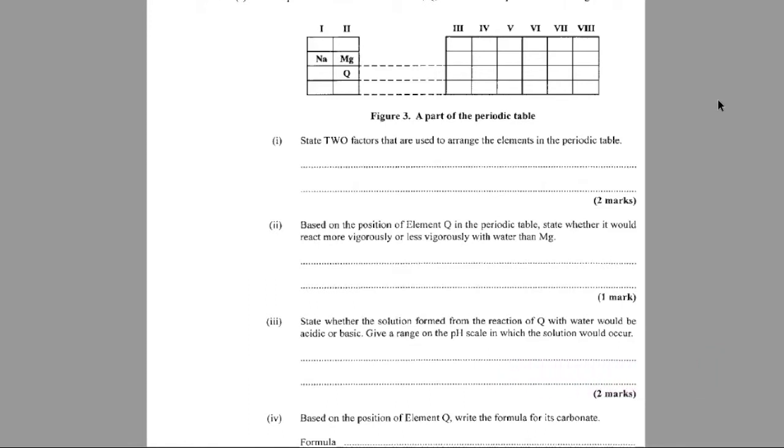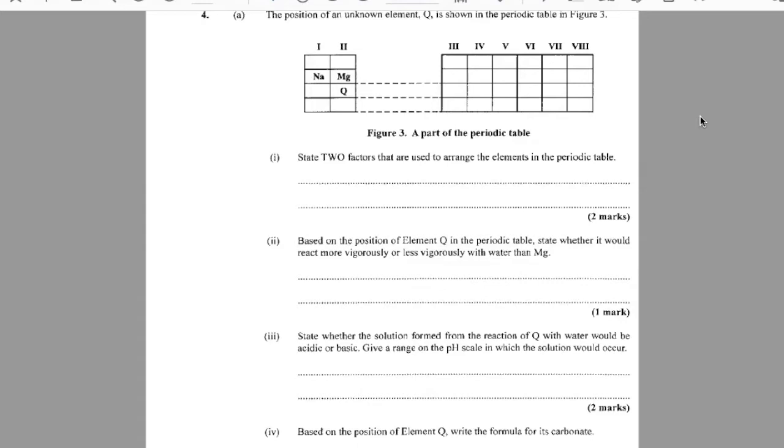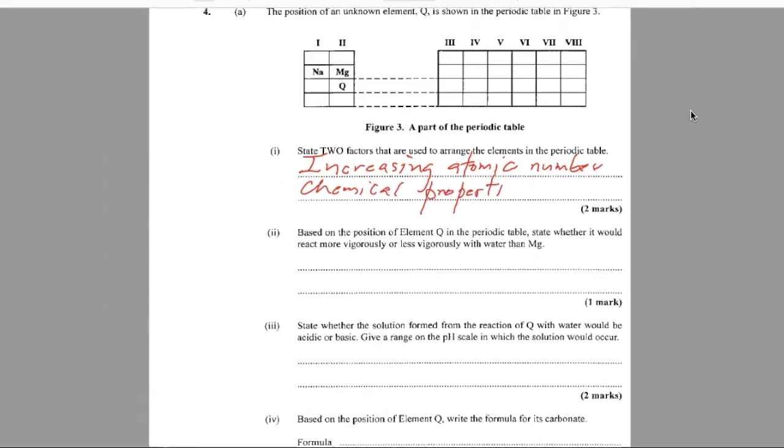Part A. The position of an unknown element Q is shown in the periodic table in figure 3. So Q is in group 2 below magnesium. That's the group that we call the alkaline earth metals. State two factors that are used to arrange the elements in the periodic table. They're arranged based on increasing atomic number. So that's one factor. There are three. We want two. We have an increase in atomic number and based on their chemical properties. We'll just state the third one, but we're only writing two according to their electronic structure.